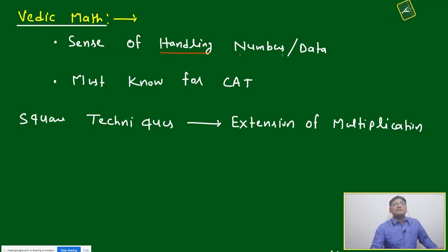Vedic math will give you the sense of handling numbers and data, and that is a must for CAT. The square technique is just an extension of multiplication. Multiplication means any two different numbers you can multiply, but if you're multiplying the same number, that is a perfect square.